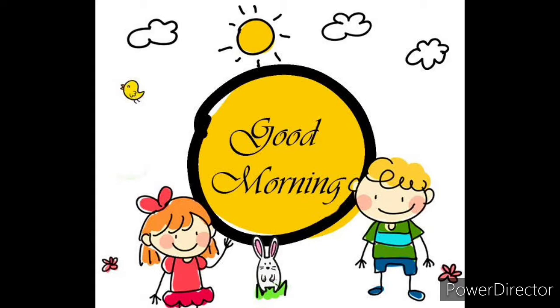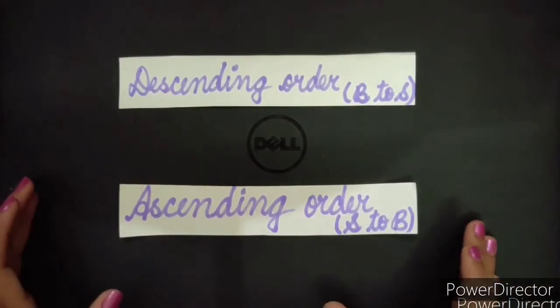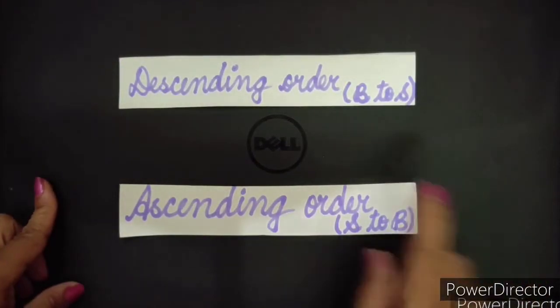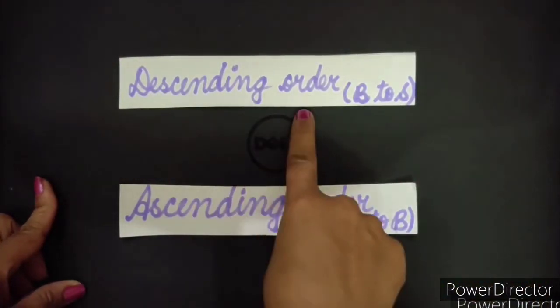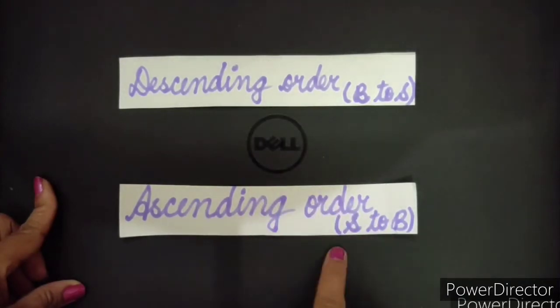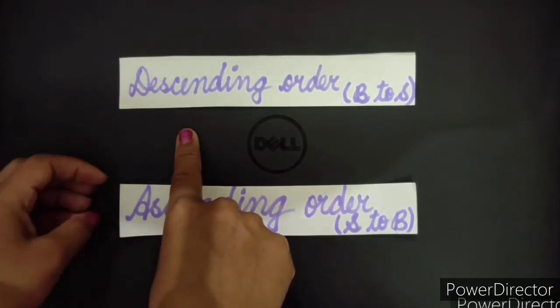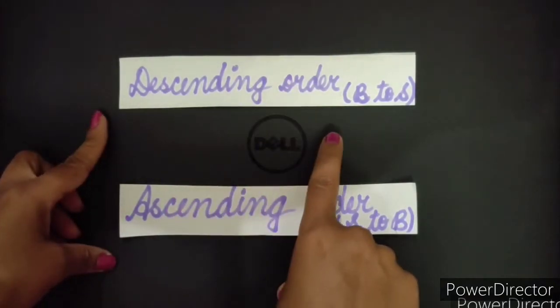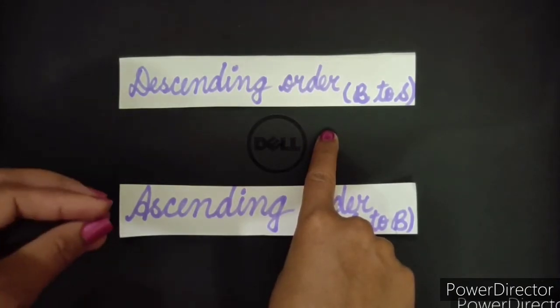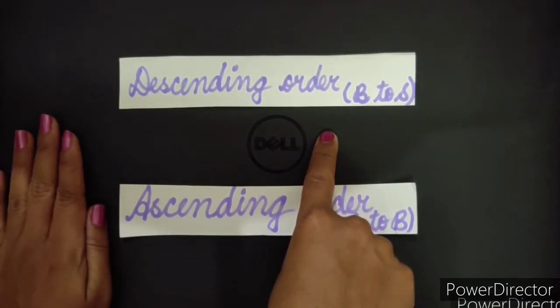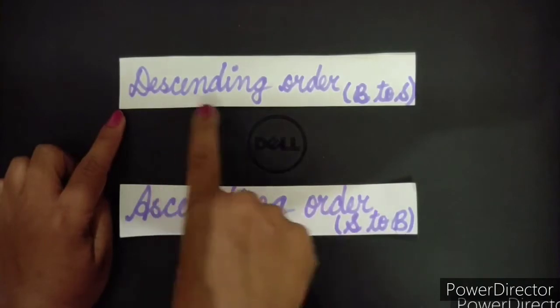I am here again with maths class and what are we going to do today? In our today's maths class, we are going to study about descending order and ascending order. We have already studied it earlier in previous chapter. This is just revision and this time it is with big numbers.